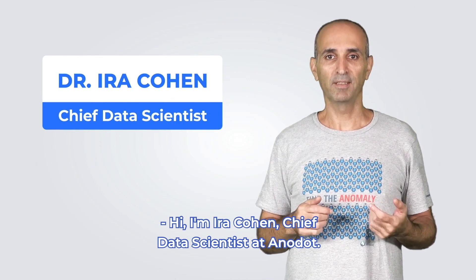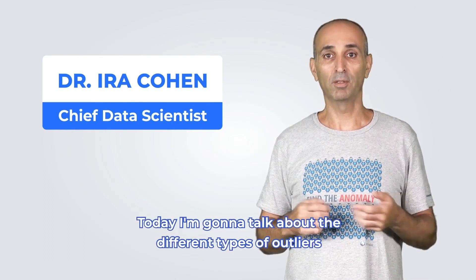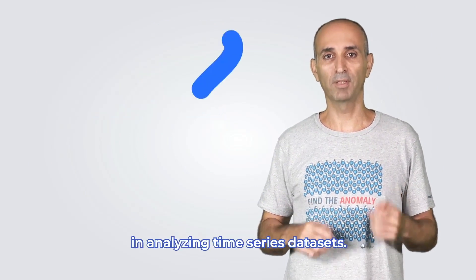Hi, I'm Ira Cohen, Chief Data Scientist at Anodot. Today I'm going to talk about the different types of outliers or anomalies that we come across in analyzing time series datasets.